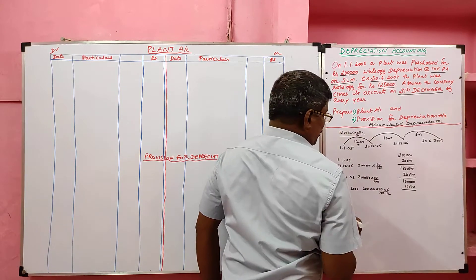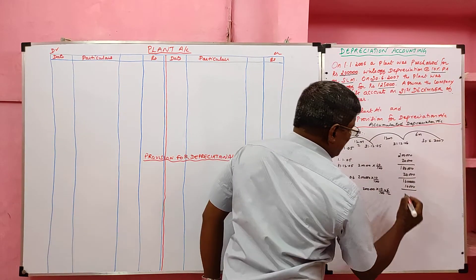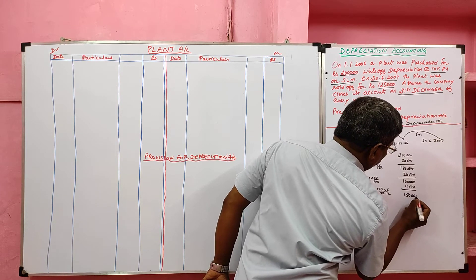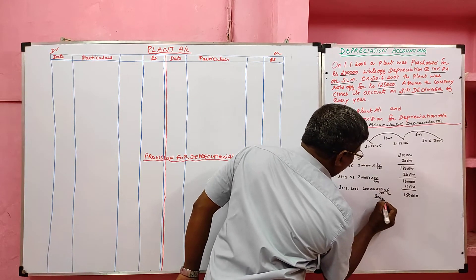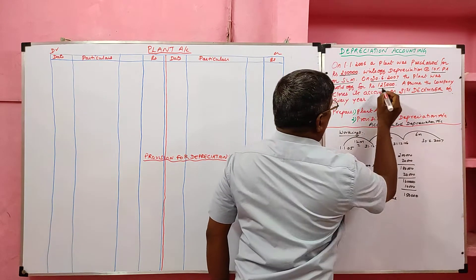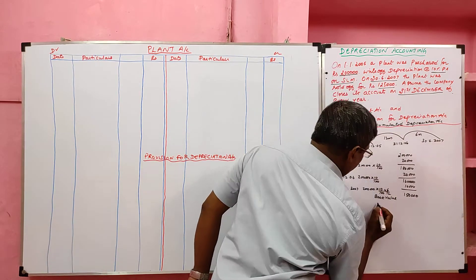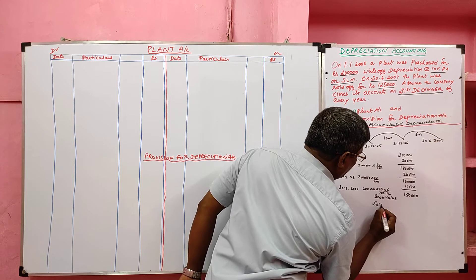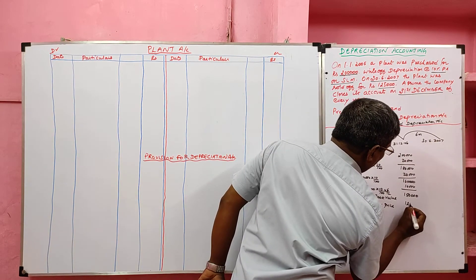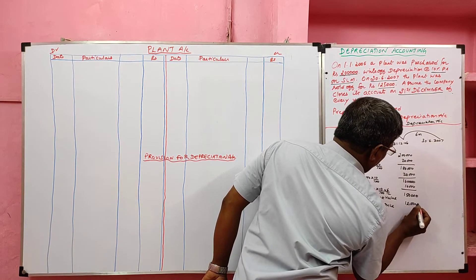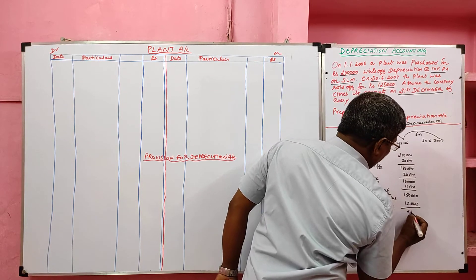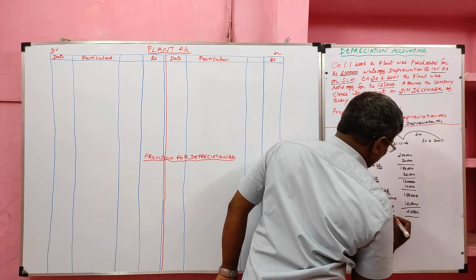After using the plant for two and a half years, the book value of the asset is 1 lakh 50,000. The plant was sold for 1 lakh 25,000. Here the book value is more than the sold price, so 25,000 is the loss on sale.